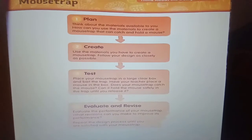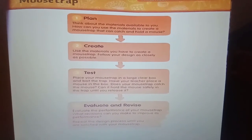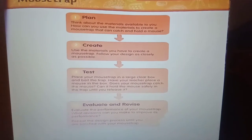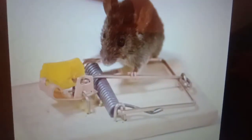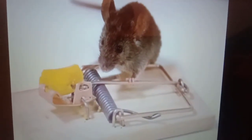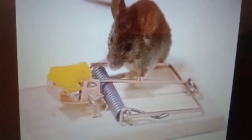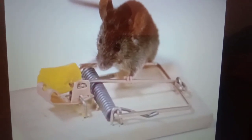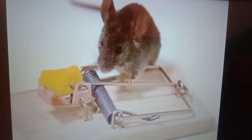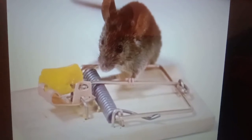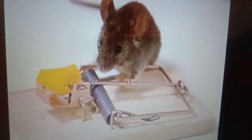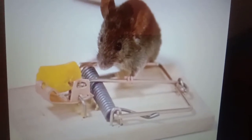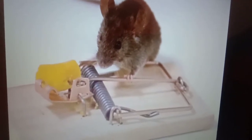Whatever changes you make, mention them in your result and do the evaluation process. On that page, firstly you have to plan — draw your design and list your materials. Then create your model using the materials. Write your result after testing and evaluate your performance. If you want any changes, then redesign your model.